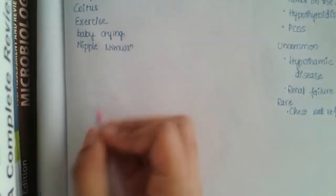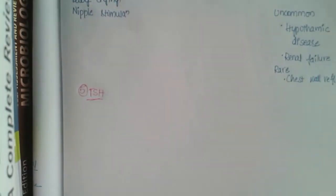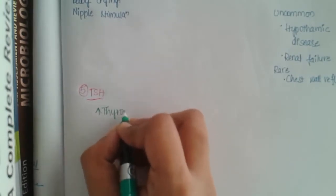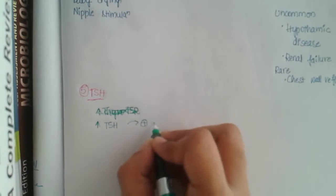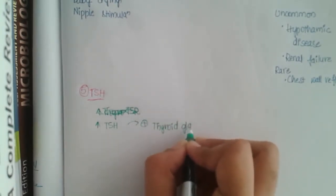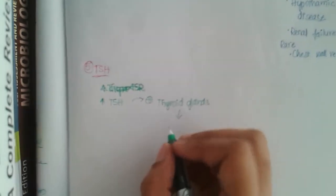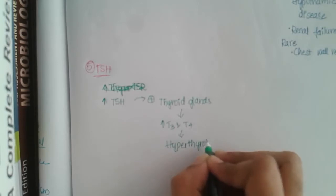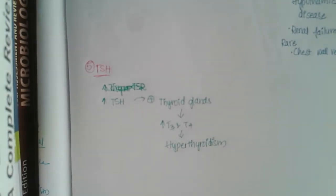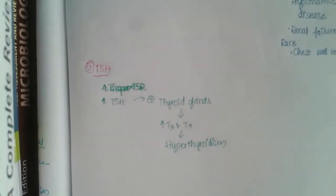Next, the fifth hormone is TSH — thyroid stimulating hormone. Increased TSH activates the thyroid gland, leading to increased T3 and T4, which causes hyperthyroidism. Increased TSH itself doesn't cause a specific pituitary disease but leads to hyperthyroidism, the manifestations of which will be covered in forthcoming classes.